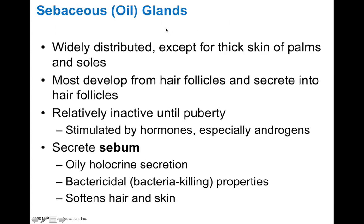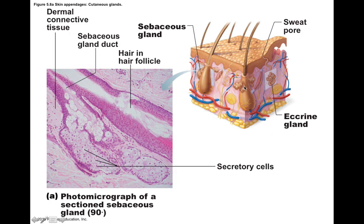Oil glands, or sebaceous glands, are associated with hair follicles and are widely distributed except in the thick skin of the palms and soles. They are relatively inactive before puberty and are then stimulated by hormones, especially androgens. The oil they produce is called sebum — an oily holocrine secretion where the entire cell bursts to become the secretion. Sebum has bactericidal properties and helps to soften hair and skin. The ducts of sebaceous glands drain onto the hair root, so growing hair brings oil up to the skin surface, conditioning both the hair and skin.